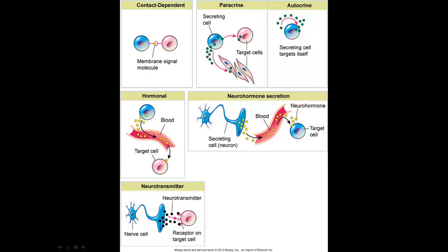Autocrine communication is when a cell secretes hormones that target itself — it's like a self-motivator. Hormonal stimulation is when a cell releases a hormone that travels through the bloodstream to reach its target cell. For example, the thyroid releases thyroid hormone into the bloodstream, which stimulates muscular cells to increase metabolism during exercise.